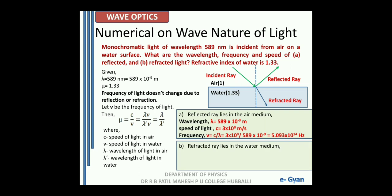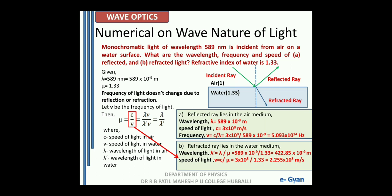Similarly, for the refracted ray which lies in the water medium, the wavelength lambda dash is equal to lambda divided by mu from the formula. On solving we get it as 422.85 into 10 raised to minus 9 meter, or 422.85 nanometer. Speed of light in water V is equal to C divided by mu, which is 3 into 10 raised to 8 divided by 1.33, giving 2.255 into 10 raised to 8 meter per second. The frequency, since it remains unaltered, is 5.093 into 10 raised to 14 hertz.